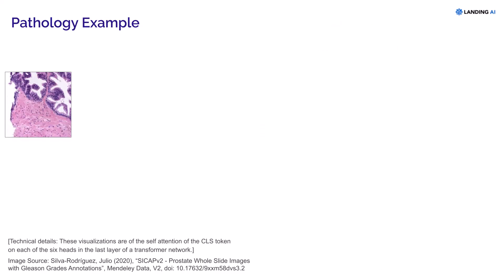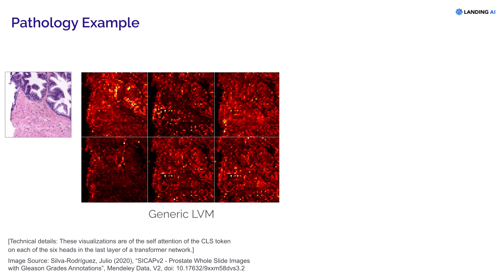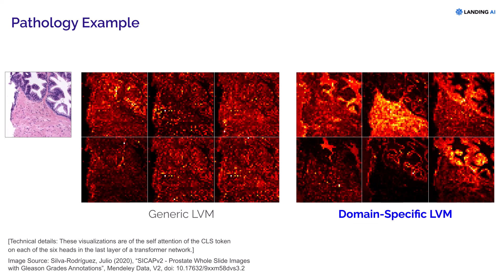Take pathology. If you take a generic LVM trained on internet images, you'll learn features that look like this. The features are pretty diffuse and nonspecific, and don't particularly highlight any of the important aspects of the image. In contrast, we've adapted an LVM to the pathology domain specifically, and it gets features that do a much better job capturing the most important features.